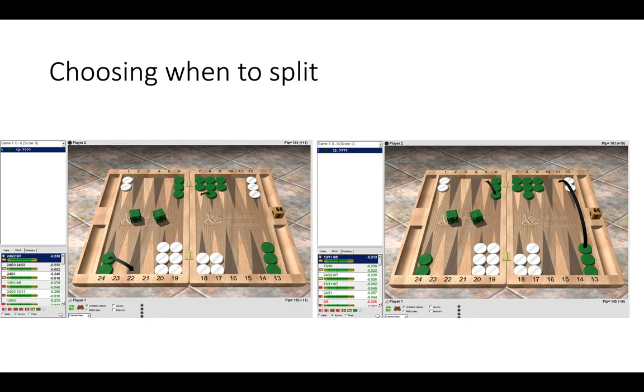Now on the right, because white has a spare on the 8-point, a spare checker, and green is no longer freezing the points, it's much better for green to play 13-11, 6-5. And splitting instead would actually be a small error.